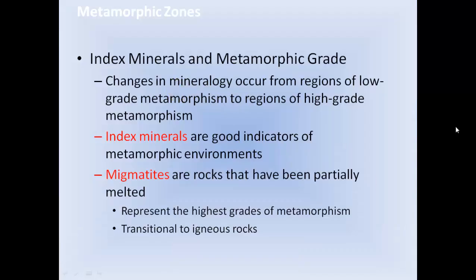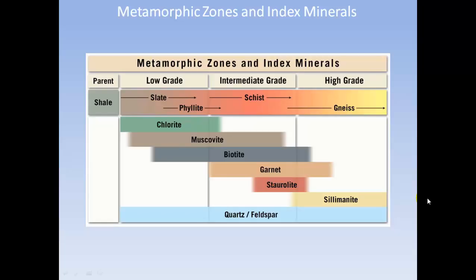Index minerals and metamorphic grade: changes in mineralogy occur from regions of low-grade to regions of high-grade metamorphism, and index minerals are good indicators of metamorphic environments. Migmatites are rocks that have been partially melted, representing the highest grade of metamorphism and transitional to igneous rocks. In shale, the progression goes from low-grade slate to phyllite, intermediate schist, and high-grade gneiss.